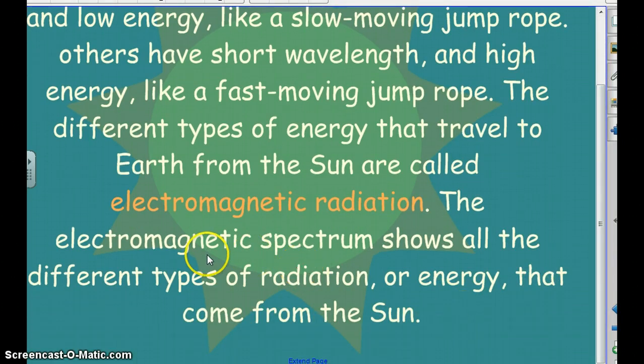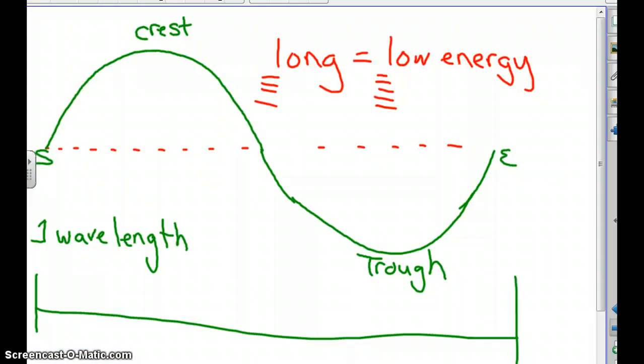All that energy coming from the sun is called the electromagnetic spectrum. This spectrum shows all the different types of radiation from the sun. Over the next couple slides, it's going to be a lot of note taking, probably a lot of pausing and writing things down.